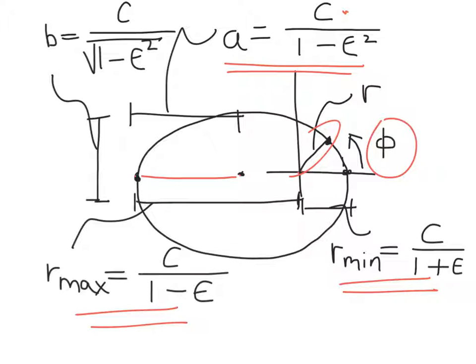The semi-minor axis, that's the distance from here down to the center of the ellipse, and that's given by C over square root of 1 minus epsilon squared. And so as you can see, you can combine A and B to actually calculate the value epsilon.